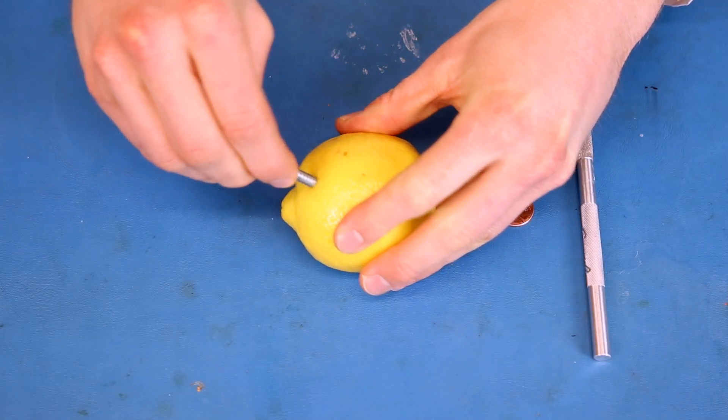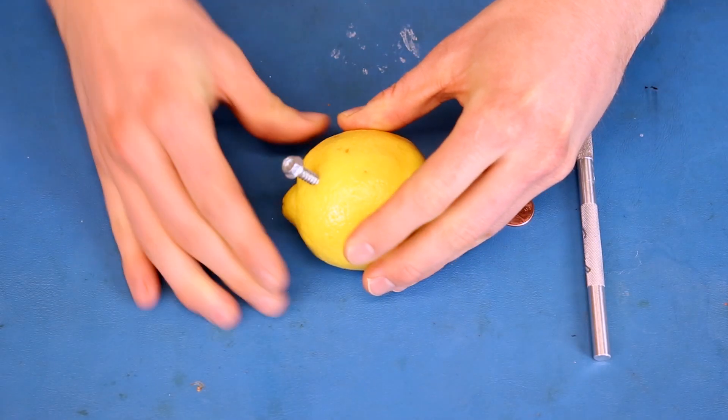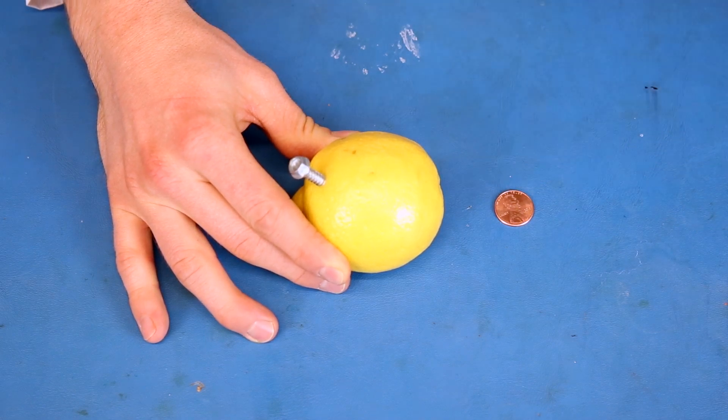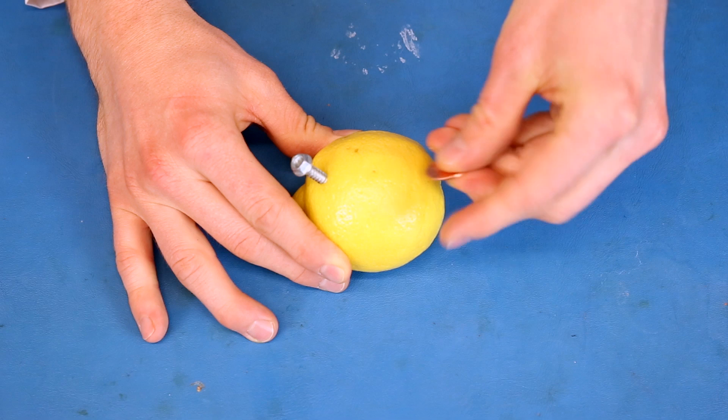To demonstrate how all this works, we can create our own crude battery out of a lemon, a zinc-plated screw, and a penny. When the battery is producing a current, the zinc in the screw is our anode and reacts with the acid in the lemon.